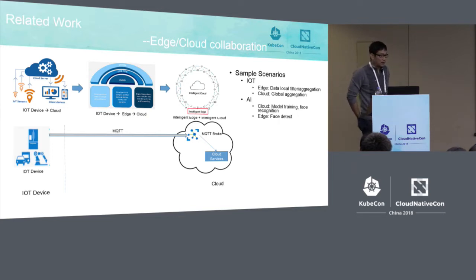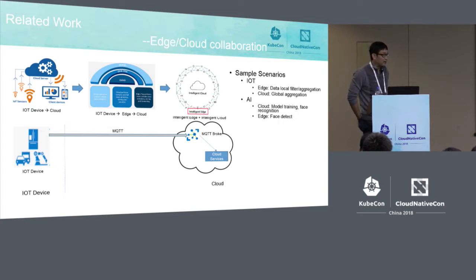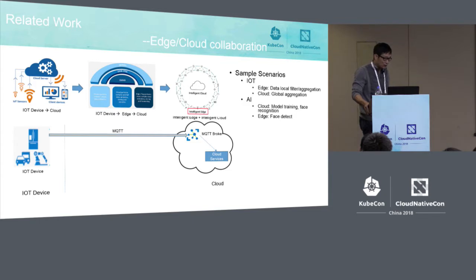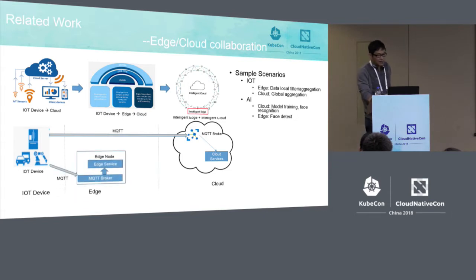MQTT is well-suited for this scenario because it is lightweight — suitable for devices with 128 KB of memory — and because IoT devices may run behind NAT, the PubSub semantic of MQTT makes it easy to send messages from the cloud to the IoT device. When we add an edge layer, we install an MQTT broker at the edge node and IoT devices send data to the edge through MQTT.